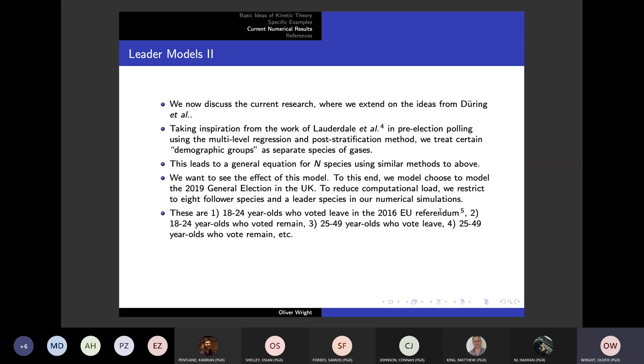We didn't want to use a hundred species. So we chose to reduce ourselves to eight follower species and one leader species. The species that we chose were 18 to 24 year olds for leave, 18 to 24 year olds for remain, so on and so forth. We chose these because age tends to have a very big effect on elections, and the work of Lauderdale et al said that the vote in Brexit was one of the most important parts.